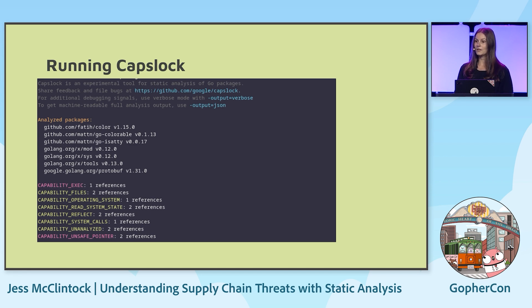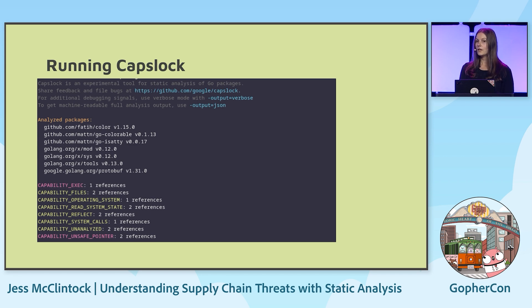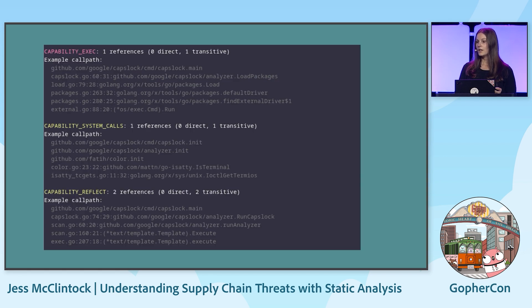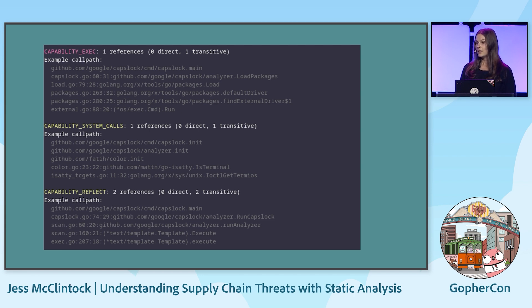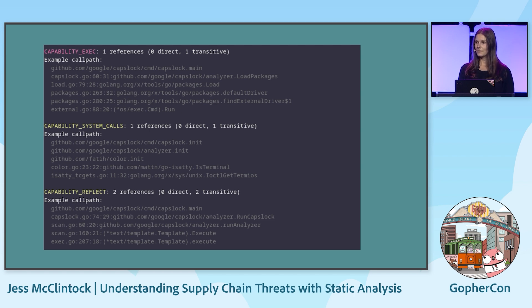To give a more concrete example of the output: you'll get a list of all the dependencies analyzed, and all of the capabilities that are available and how often they are used, so you can check which ones are the most easy to remove. If you want to dig into these capabilities further, you can also get the call paths. If you're curious about why a package ends up using system calls, you can look into the call path and see — for example, the coloring library being used is checking the TERM environment variable to understand whether it can print colors. So even if a capability isn't expected, you can check the call paths and see if it actually needs to be done.